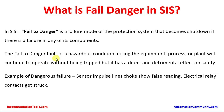In a fail to danger fault, when a hazardous condition arises, the equipment, process, or plant will continue to operate without being tripped, and this has a direct and detrimental effect on safety. The safety instruments are designed to ensure the plant shuts down under hazardous conditions to maintain safety. However, in fail to danger mode, the type of failure is unknown, making prevention difficult.